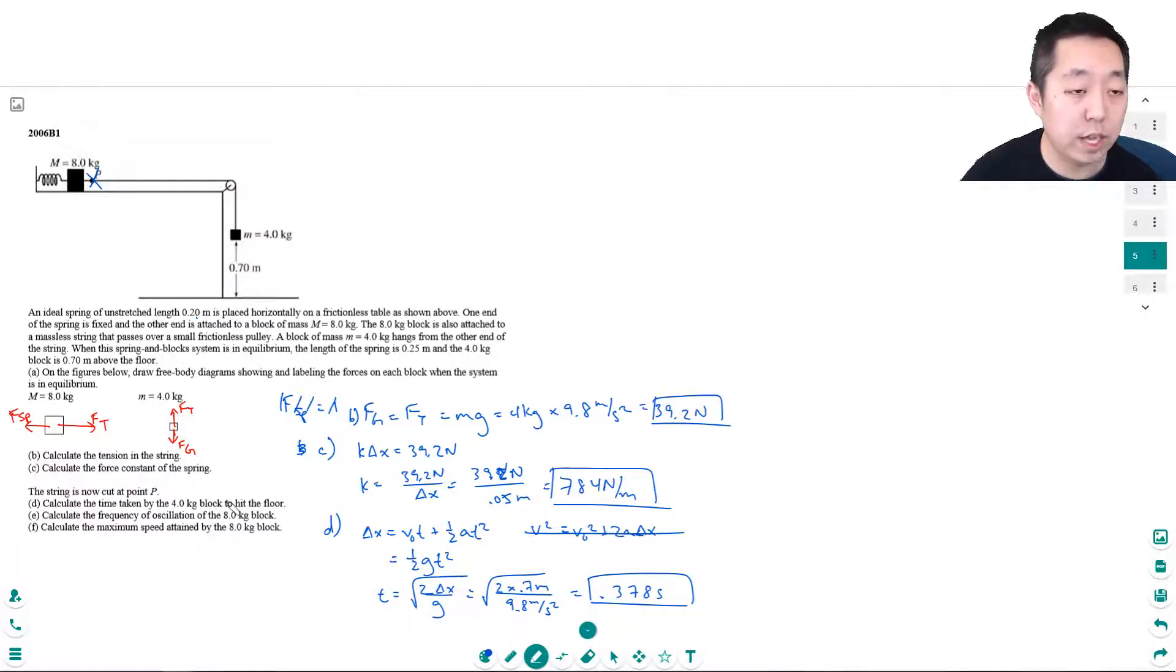Calculate the frequency of oscillation of the 8 kilogram block. Frequency of oscillation is 1 over T, and for oscillation on the spring that's 1 over 2 pi times the square root of m over k, or otherwise you can write this as k over m.